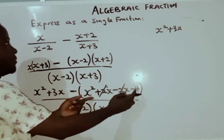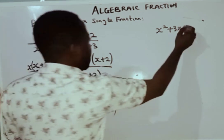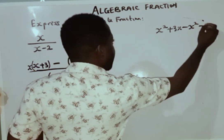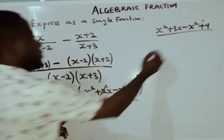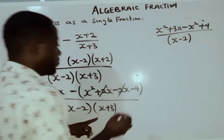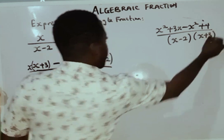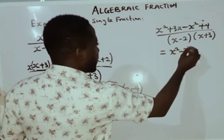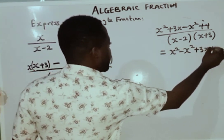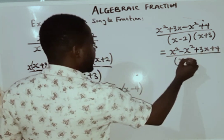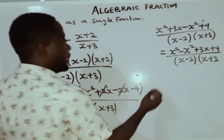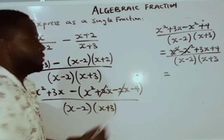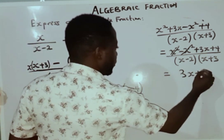The negative sign outside the brackets multiplies everything inside, so minus times x squared gives minus x squared, and minus times minus 4 gives plus 4. All over x(x minus 2)(x plus 3). Since x squared minus x squared equals zero, those cancel, and I am left with 3x plus 4 all over x(x minus 2)(x plus 3).